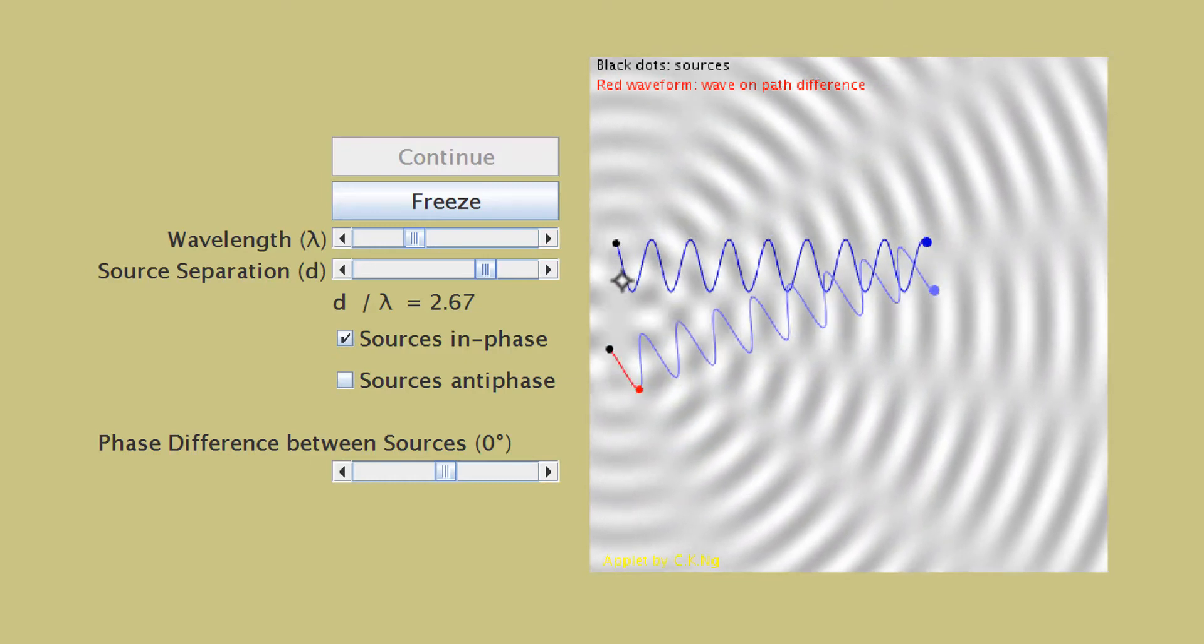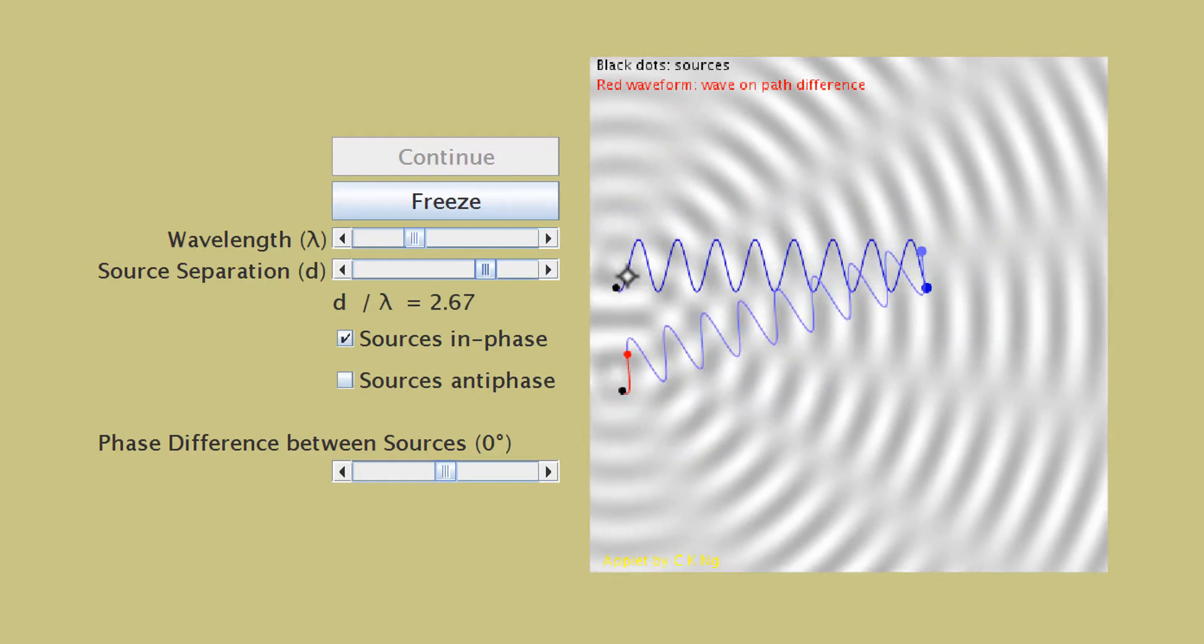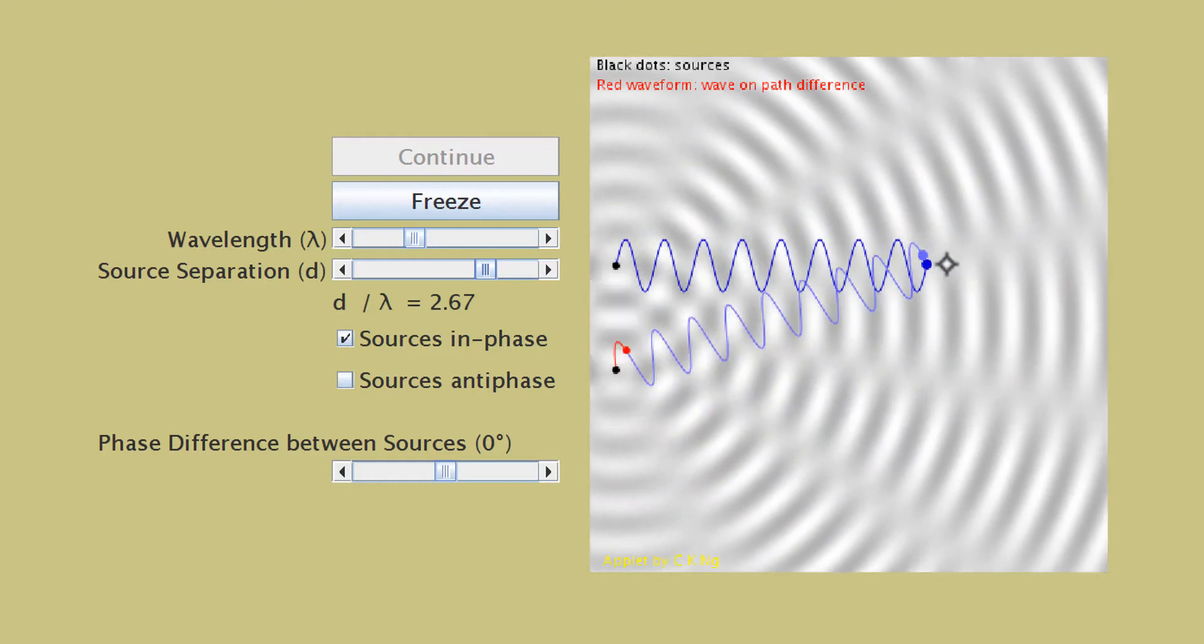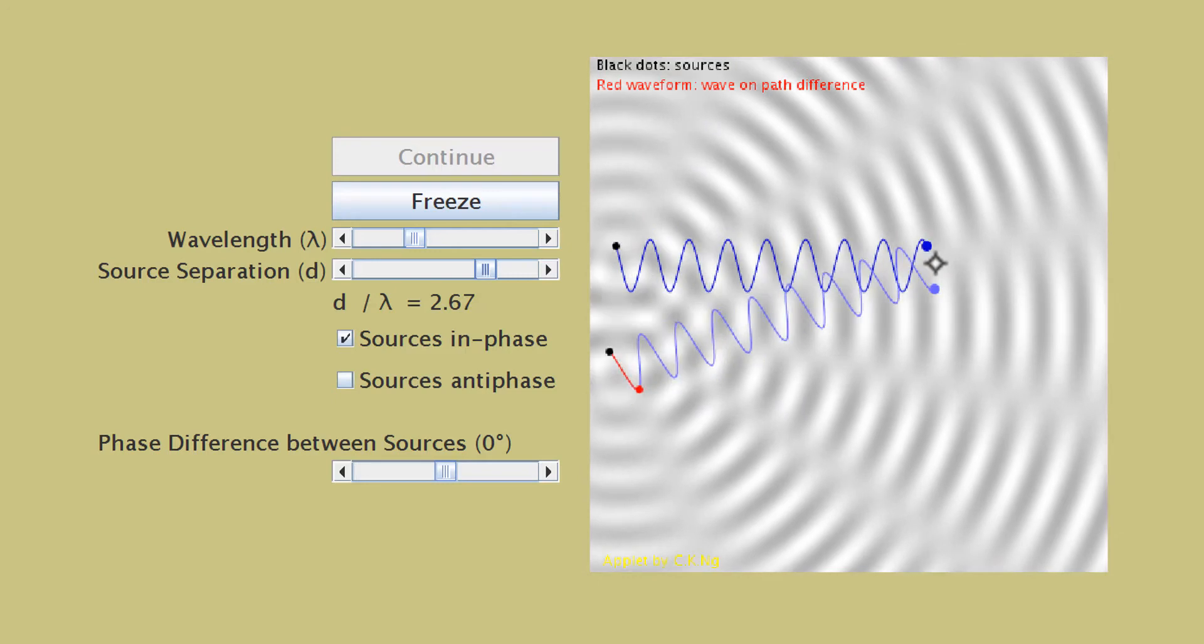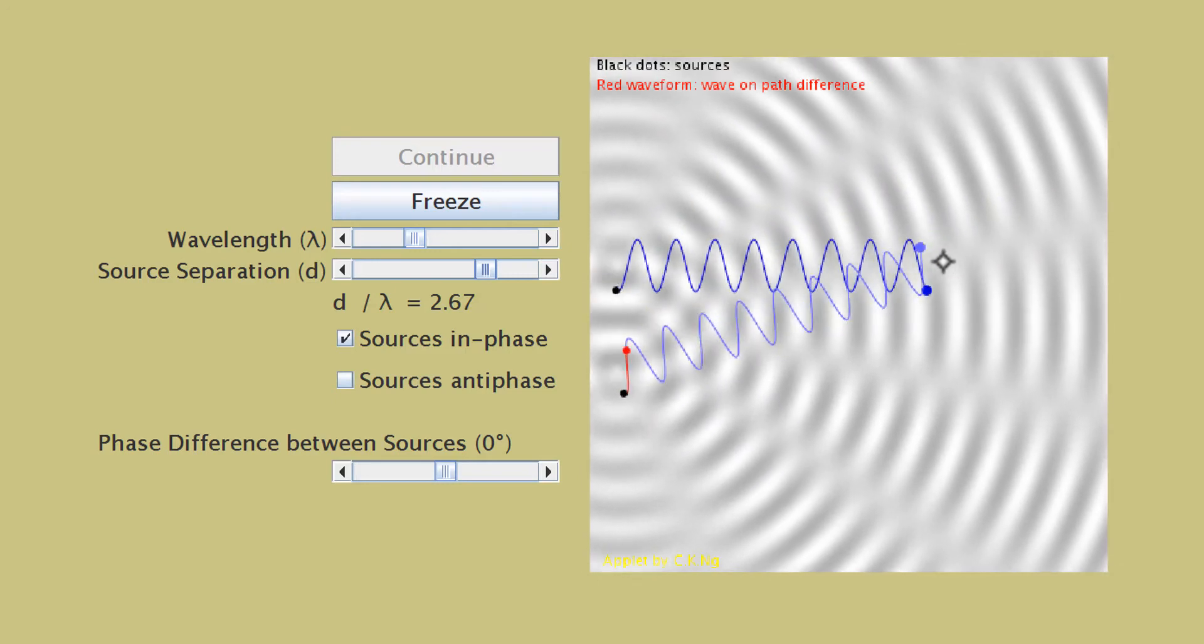And because of this, the two waves, even though they leave the sources in phase, they arrive in antiphase. That's why we have a destructive interference here.